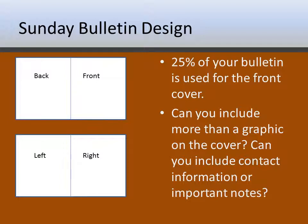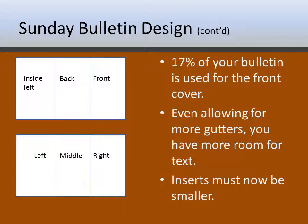That means there's basically only 75% of your Bulletin that you can use to convey information. With the front of your Bulletin you can certainly include contact information, the name of the series, and other content. But usually the cover doesn't change, so from week to week that space essentially ends up wasted. As an alternative, I would suggest going to a tri-fold brochure. These are more difficult to fold, but even when you allow for the extra gutter space — the space between text on different pages — only 17% of your Bulletin is used for the front cover instead of 25%. And it's amazing how much more information you can get into your Bulletin just by going to a tri-fold instead of a bi-fold.